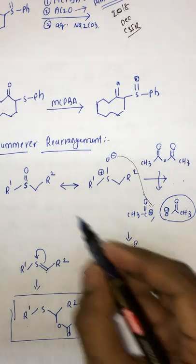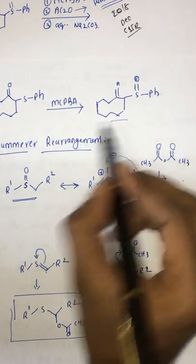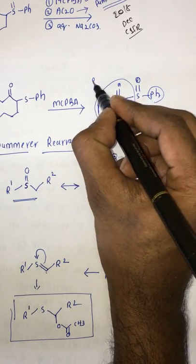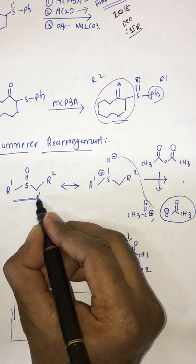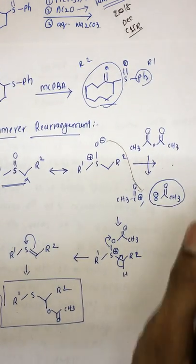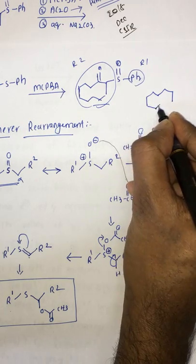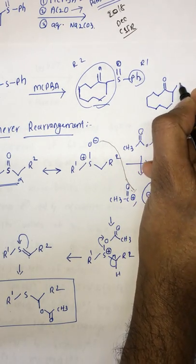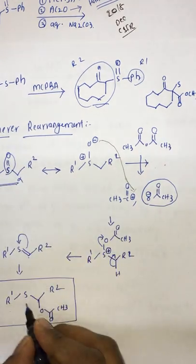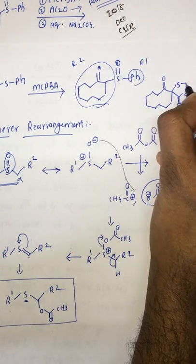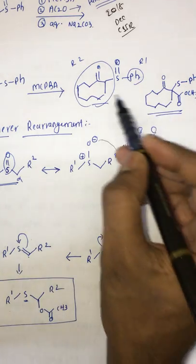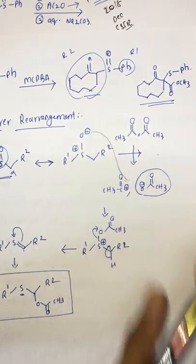Now applying this to our substrate: we have S=O, where R1 is phenyl. At the alpha position we keep an acetate group. The sulfoxide converts into sulfide, meaning this becomes sulfur and this is a phenyl group. This is the product in the second step of Pummerer rearrangement.